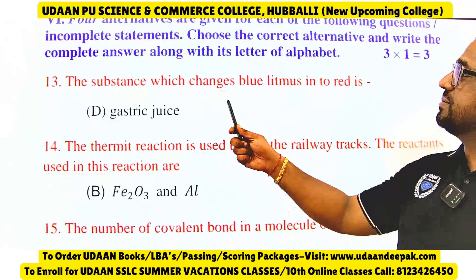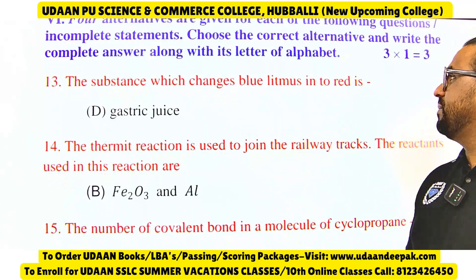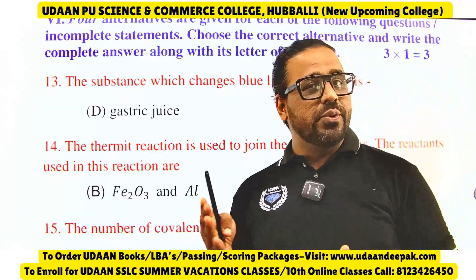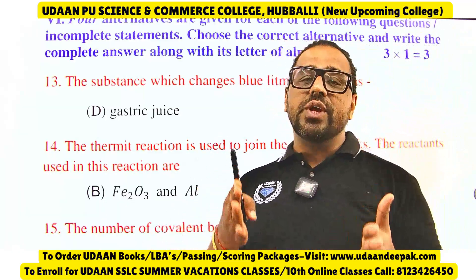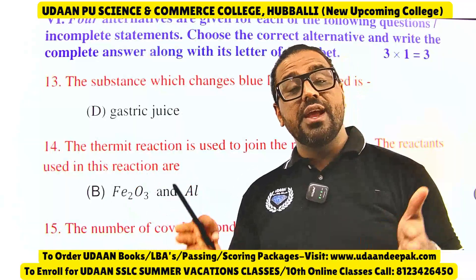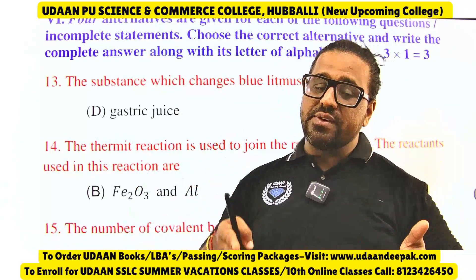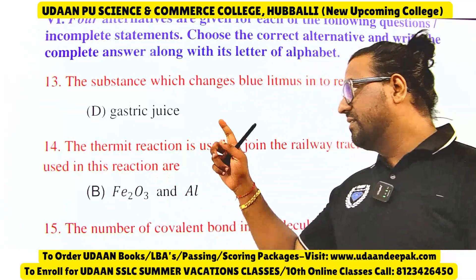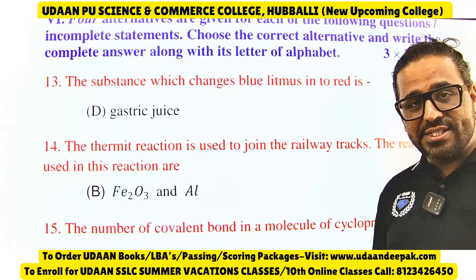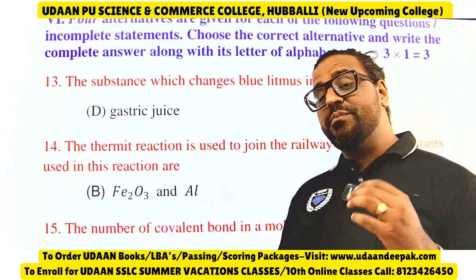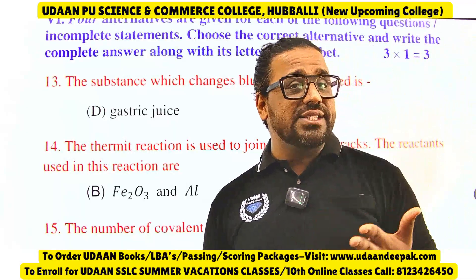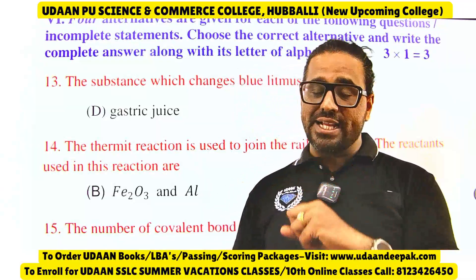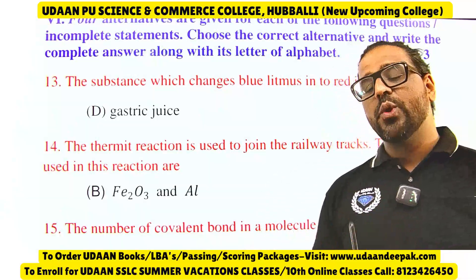The substance which changes blue litmus paper into red litmus paper — you know that acids convert blue to red. Gastric juice is an acid. Let me know in the comment section which acid is present in the stomach, that we call gastric juice.